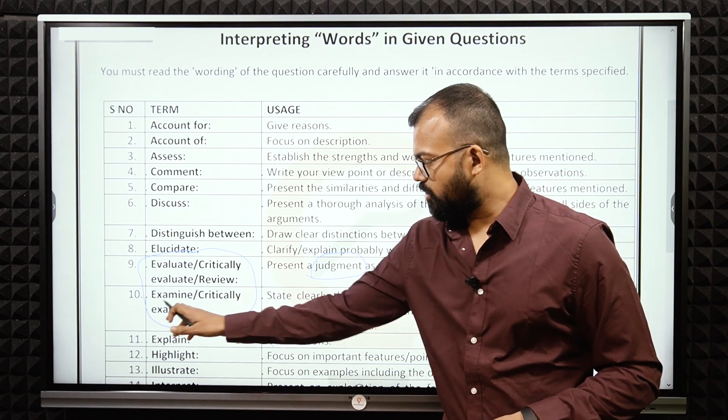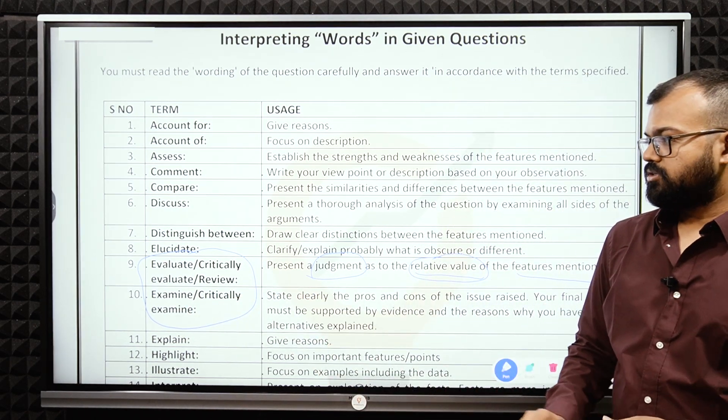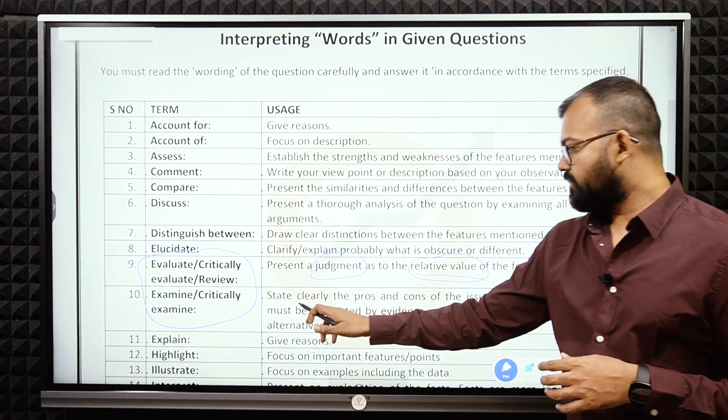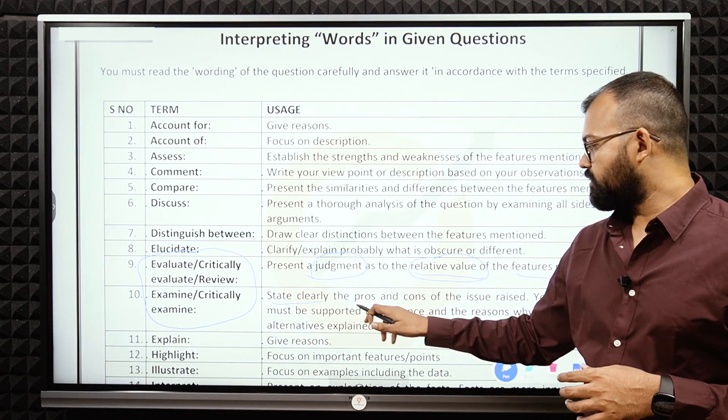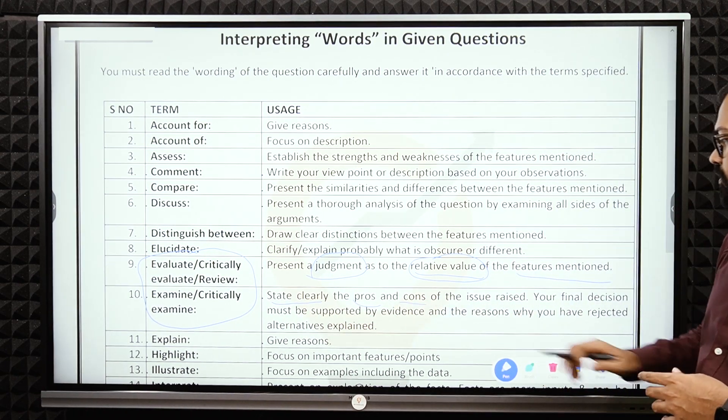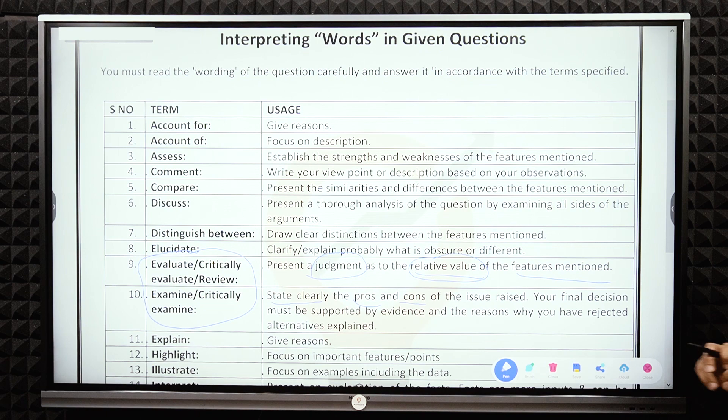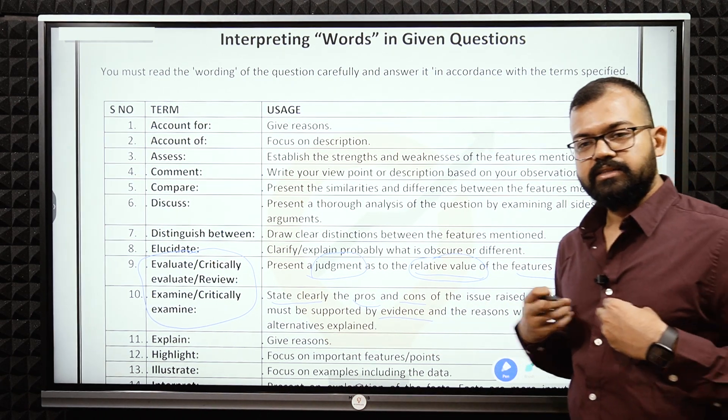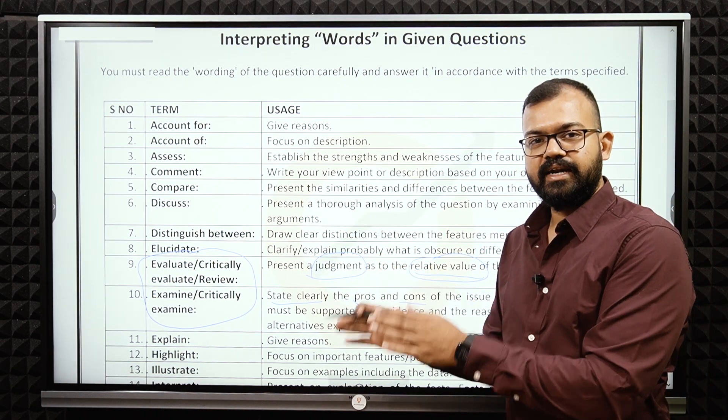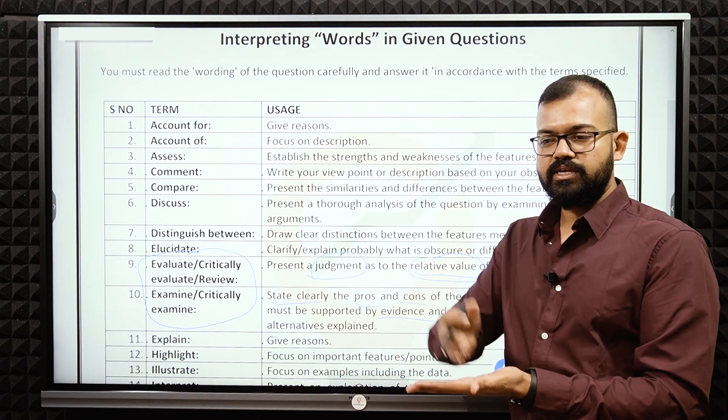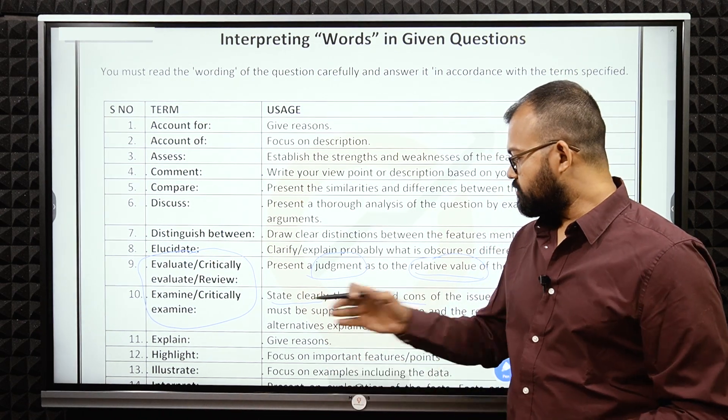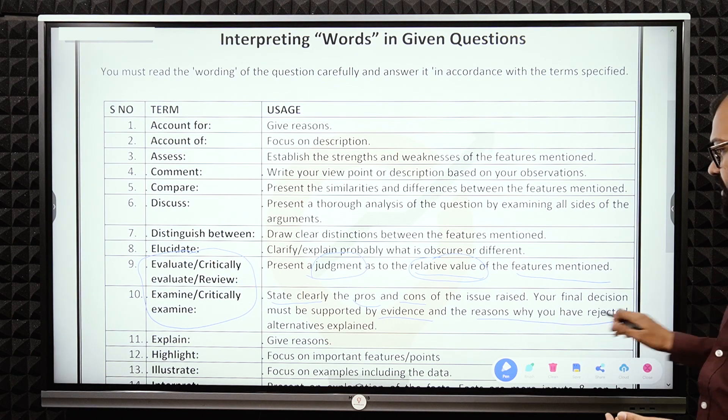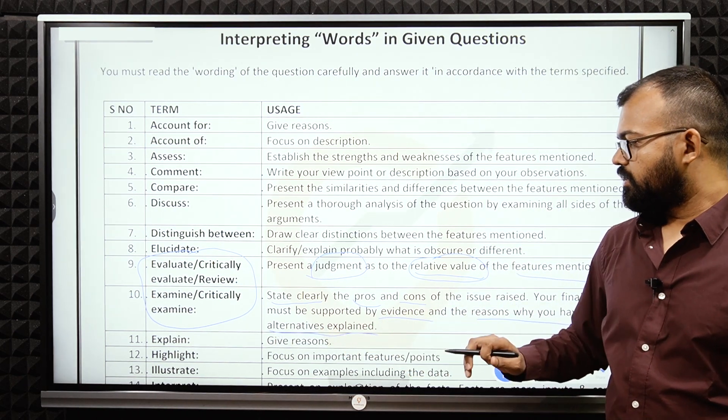10th one: examine or critically examine. The difference here is the first one is evaluate and then examine. Here you have to clearly mention all the pros and cons of the issues raised. Your final decision must be supported by the evidence. It means if I am saying that inflation is going up, then I have to present that data like inflation in June, this July, and currently we are in September.